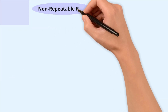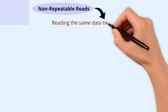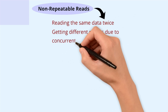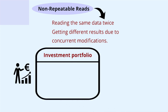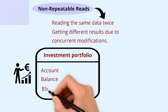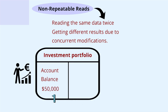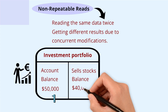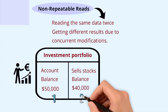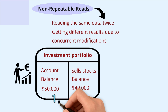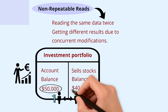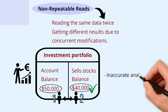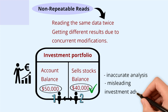Non-repeatable reads means reading the same data twice and getting different results due to concurrent modifications. Say you are a financial analyst reviewing a client's investment portfolio. You check the account balance and see $50,000. While you are analyzing the details, the client sells some stock holdings, reducing the balance by $10,000. If you recheck the total balance without proper isolation, you might end up seeing $50,000 again instead of $40,000, leading to inaccurate analysis and potentially misleading investment advice.